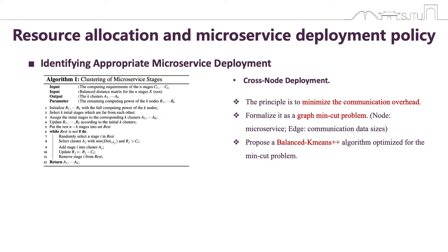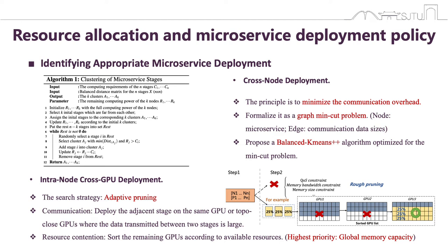On each node, cross-GPU deployment deploys the instances of each allocated microservice stage to multiple GPUs. We propose a search strategy to quickly find a reasonable deployment scheme through adaptive pruning. The ideal pruning finds the appropriate trade-off between inter-GPU communication and shared resource contention when deploying microservice instances. If the data transmitted between two adjacent stages is particularly large, Astria deploys the adjacent stages on the same GPU or topologically close GPUs. As global memory capacity is a major resource bottleneck for GPU microservices, Astria sets it at the highest priority in the deployment scheme.